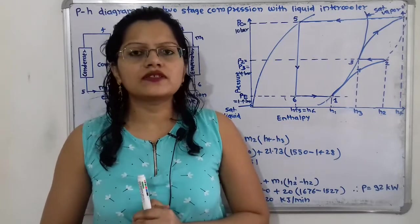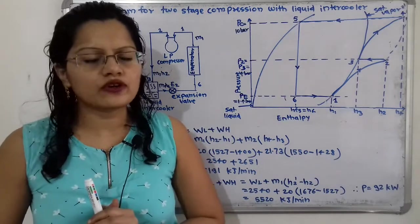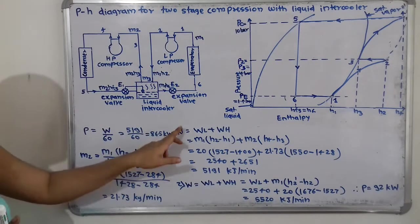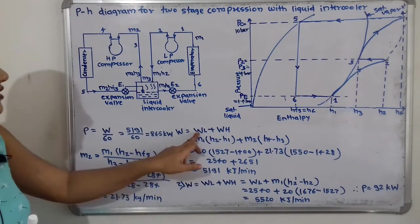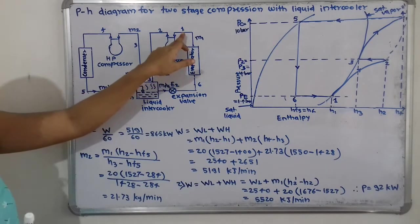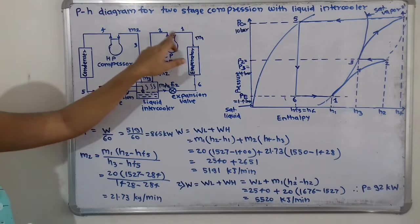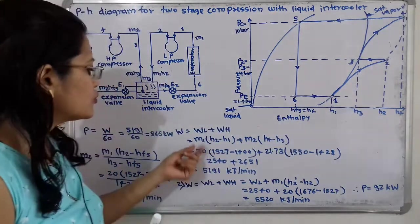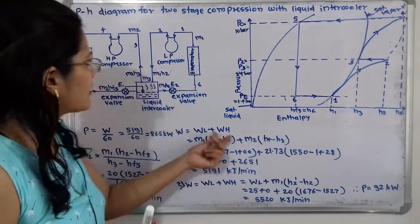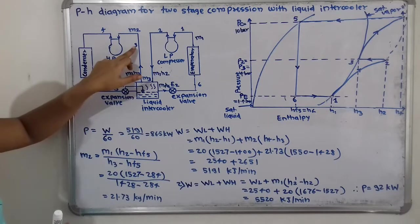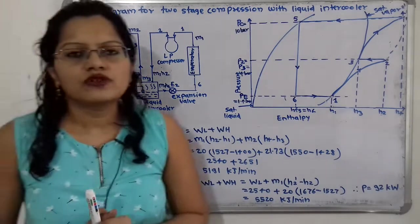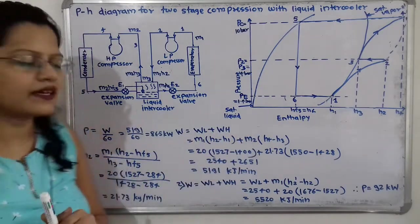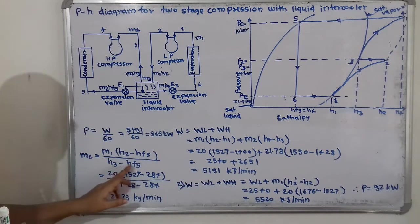Calculating power for two-stage compression: power = W / 60, and W = WL + WH. For the low pressure compressor, WL = m1 × (h2 − h1). For the high pressure compressor, we need mass m2, which is greater than m1 because liquid refrigerant is added in the intercooler. m2 = m1 × (h2 − hf5) / (h3 − hf5).